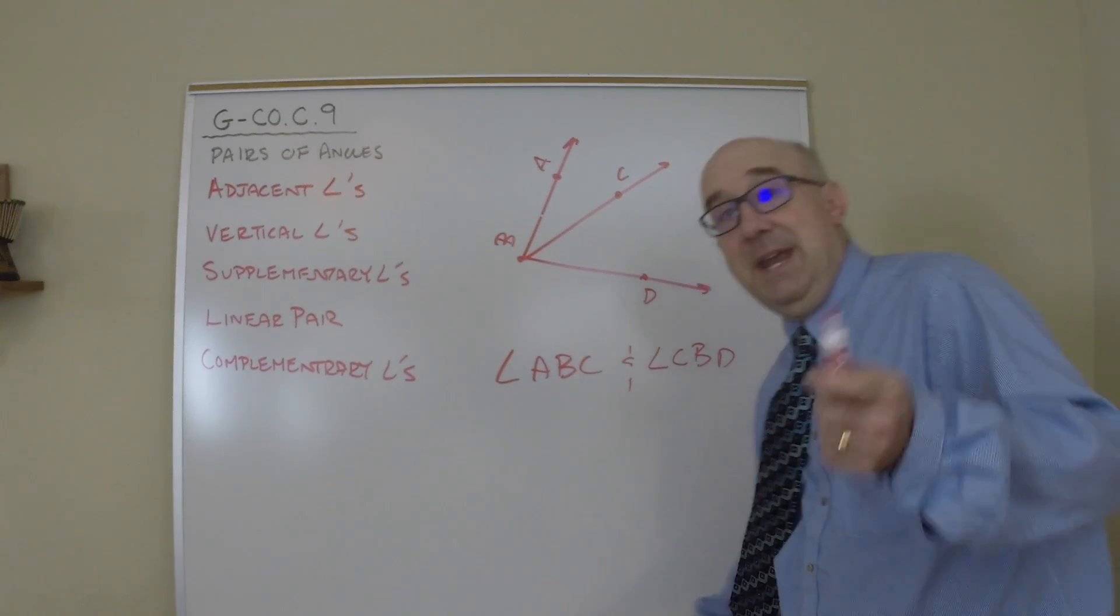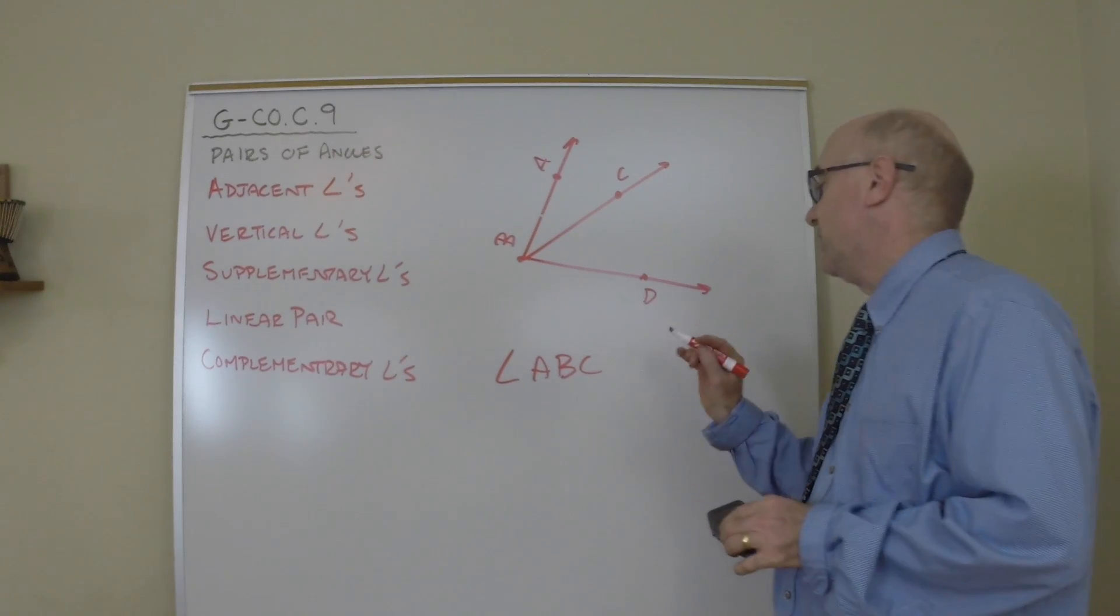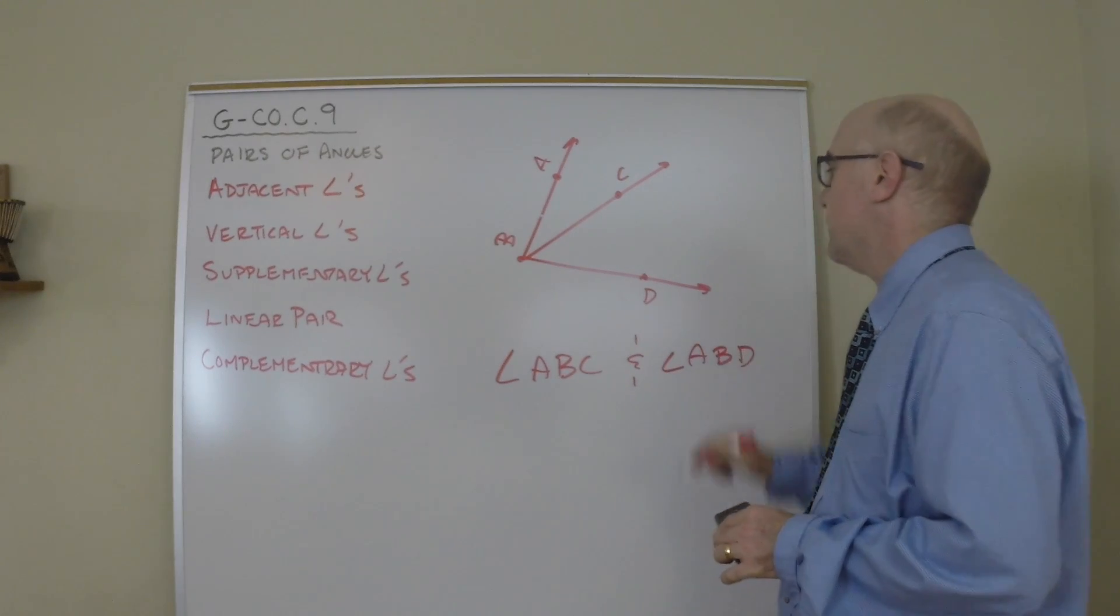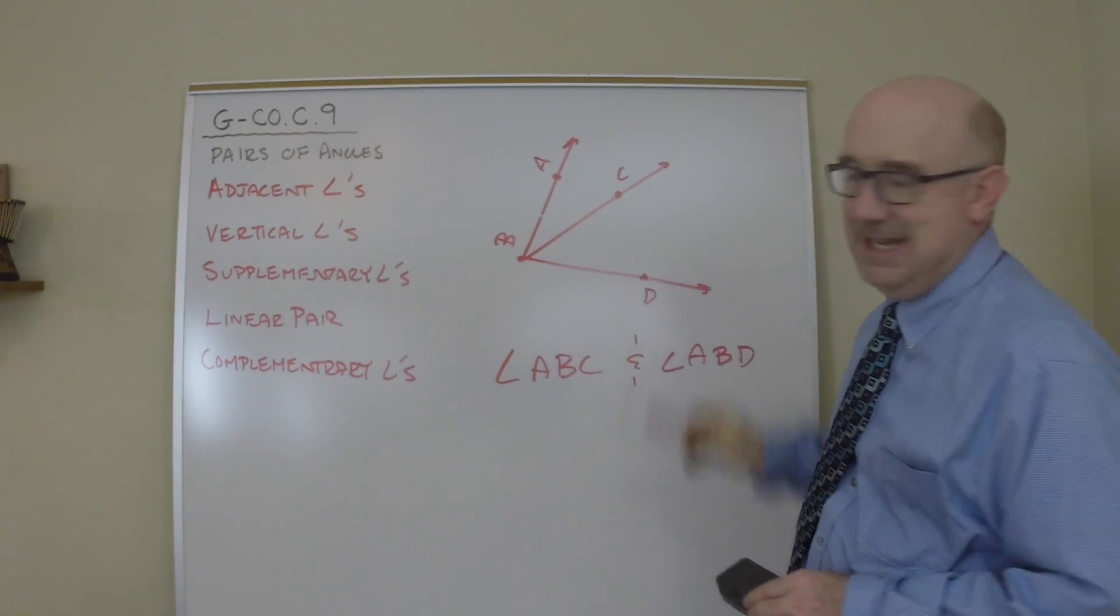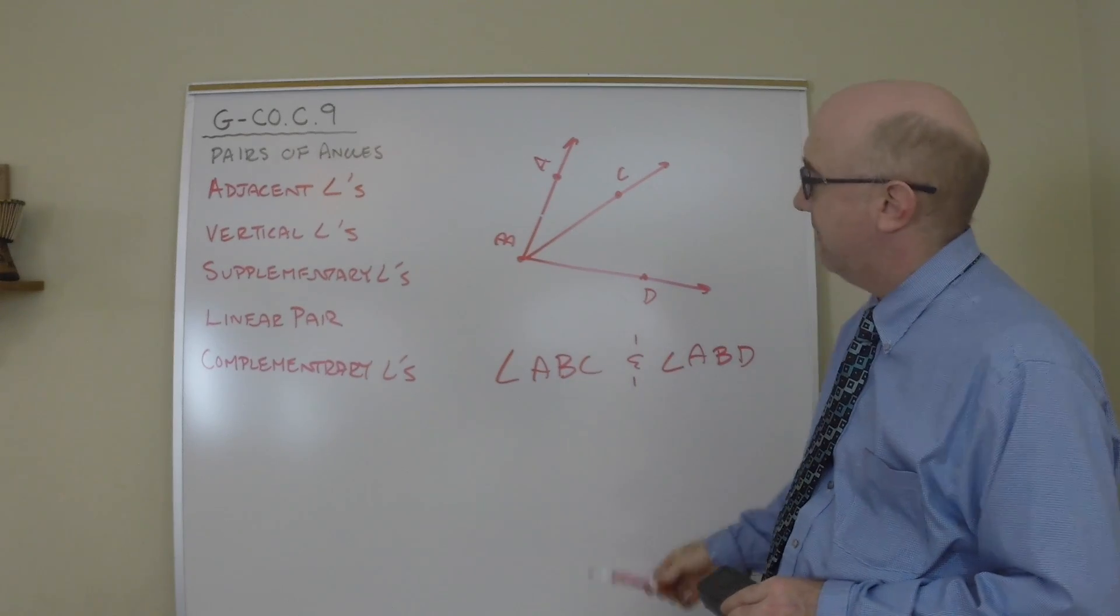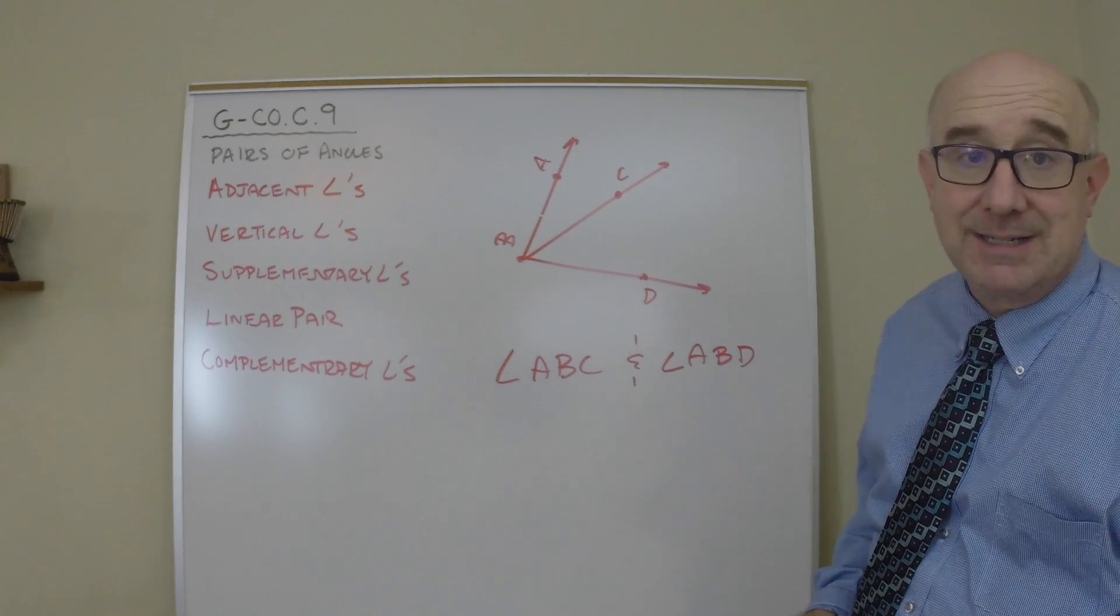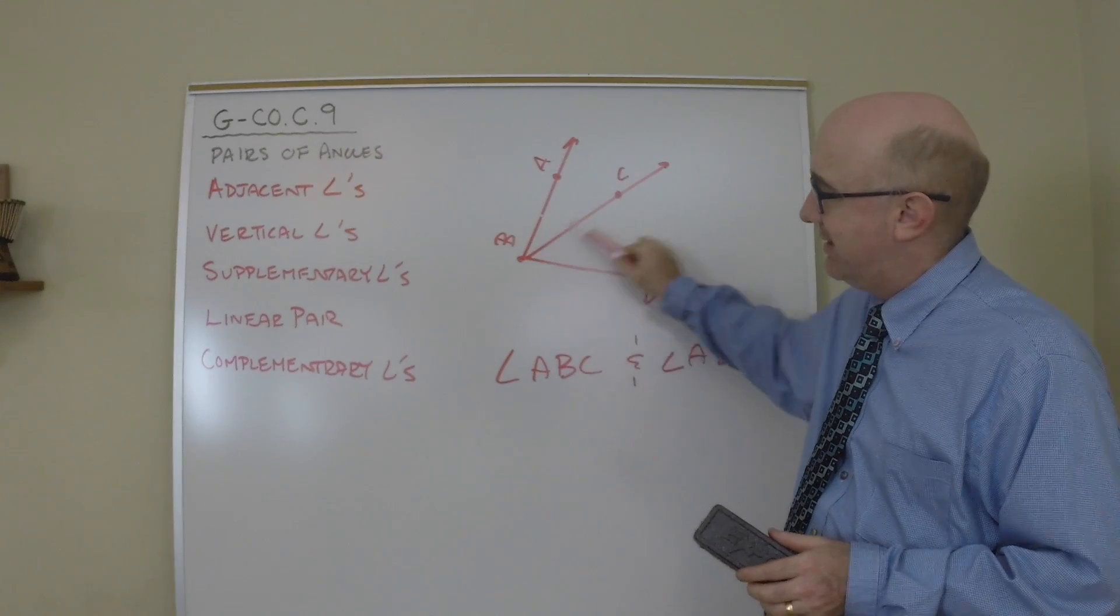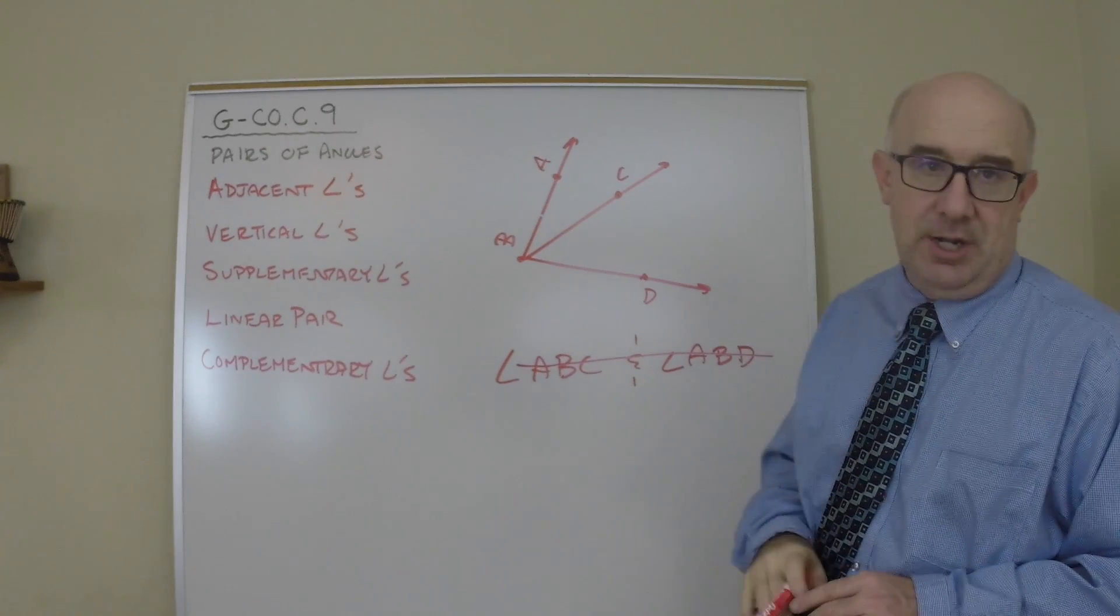A common mistake here with this one is for students to list two angles like these two. These two angles ABC and ABD do share vertex B, you can see that, do share ray BA, there's BA and BA, but they have common interior points. Angle ABC is in the interior of angle ABD. These are not adjacent.